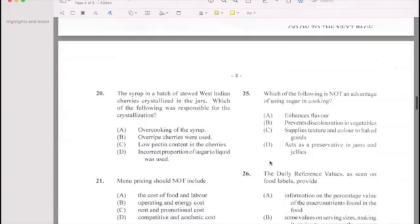Number 21: The syrup in a batch of stewed cherries crystallizes in the jam. Which of the following is most possible? The syrup was overcooked.